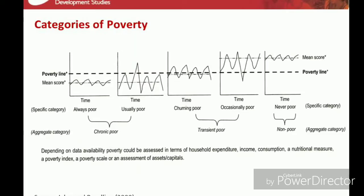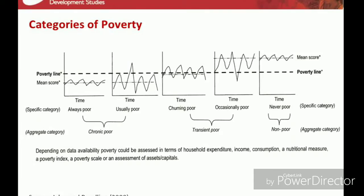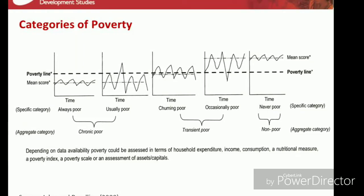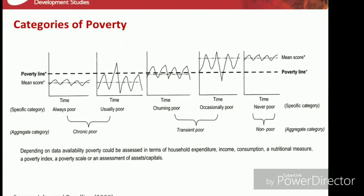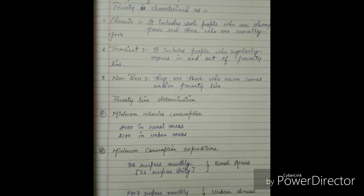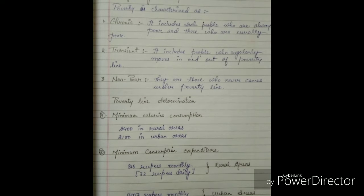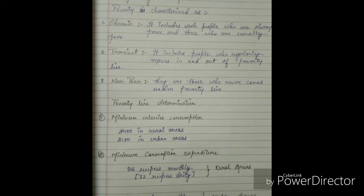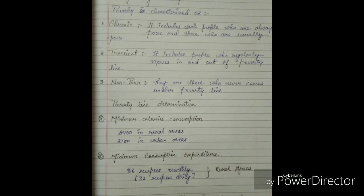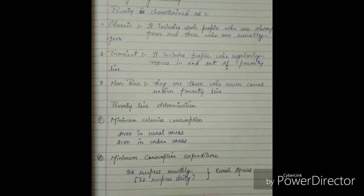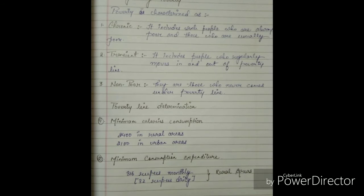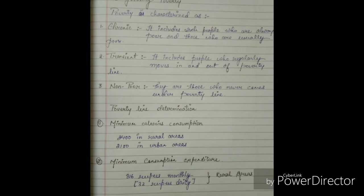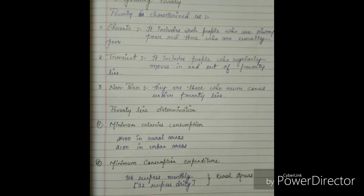The second category is transient poor, which includes churning poor and occasionally poor. Churning poor are people who regularly move in and out of poverty — for example, small farmers and seasonal workers who sometimes have work and sometimes do not. Occasionally poor are those who are generally rich but, due to a patch of bad luck, lose their resources and temporarily fall under the poverty category. These two groups together are known as transient poor.